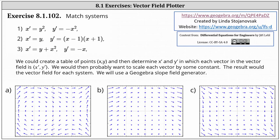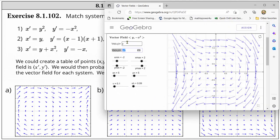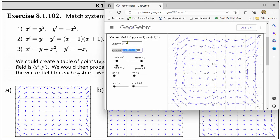And now let's look at number two. We have x prime is equal to y, tab, y prime is equal to the quantity (x minus one), times the quantity (x plus one), enter. And we already have a very nice slope field for the system.